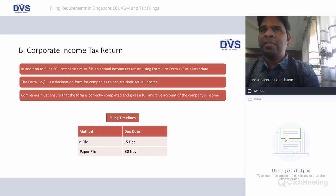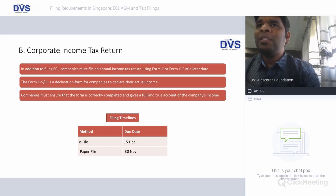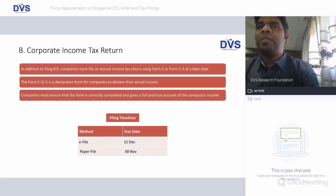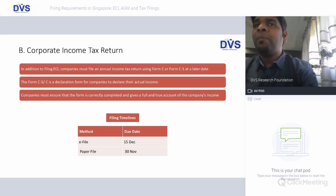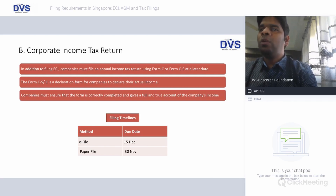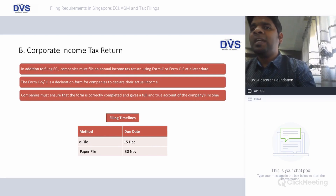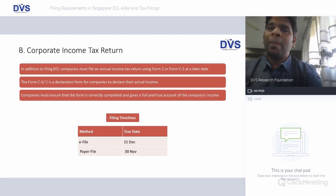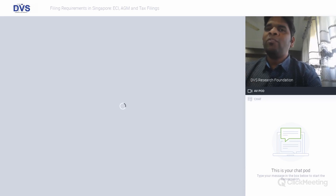Coming back to the corporate income tax return, it is mandatory to file it in addition to the ECI filing. There are two types of forms: Form C and Form CS. Form CS has a later deadline and is easier to prepare. Form C or CS is a declaration form for companies to declare their actual income, and companies must ensure the form is correctly completed and gives a full and true account of the company's income. For e-filing the deadline is December 15, and for paper-based filing it should be done by November 30 of the assessment year.